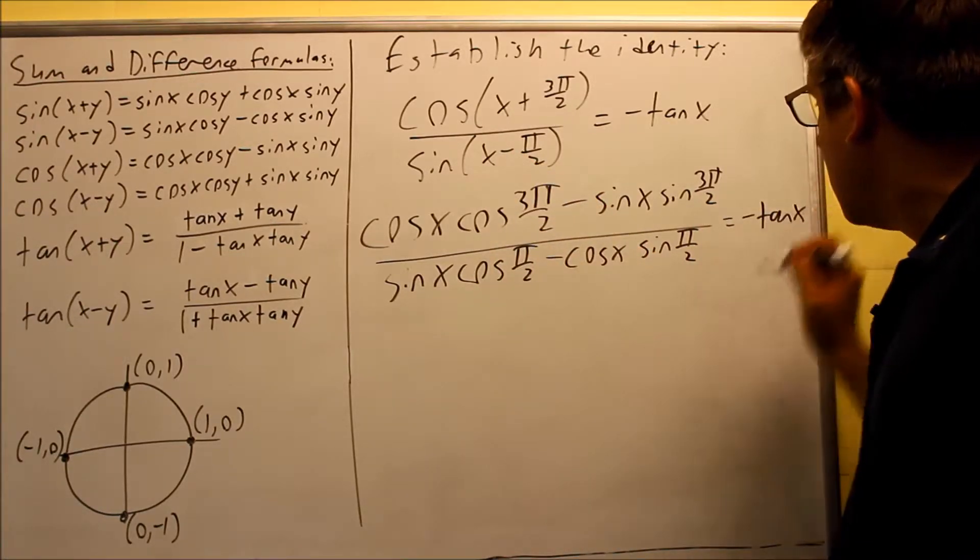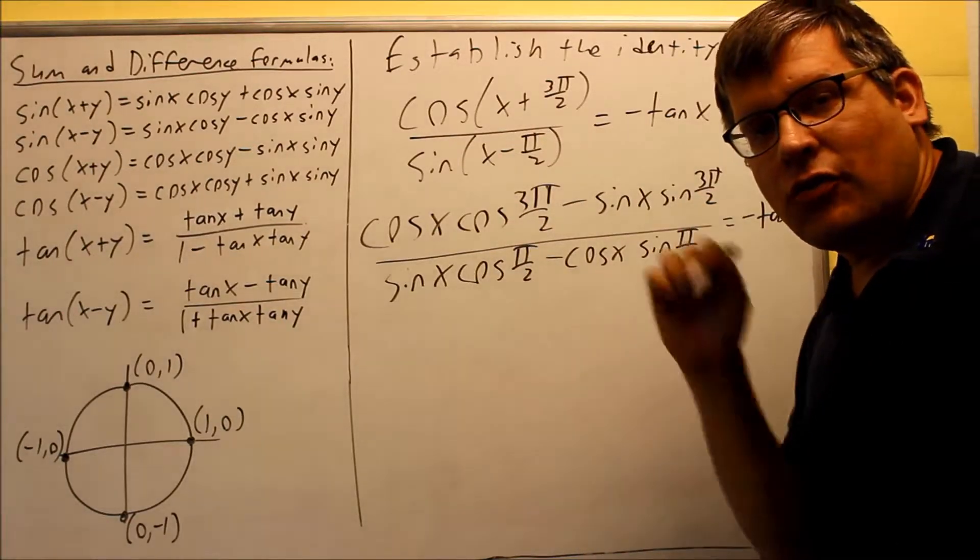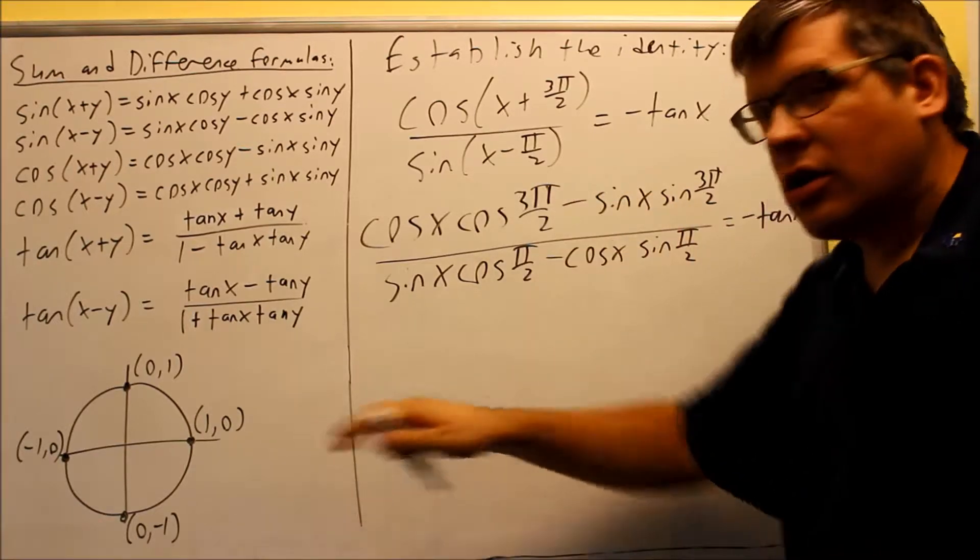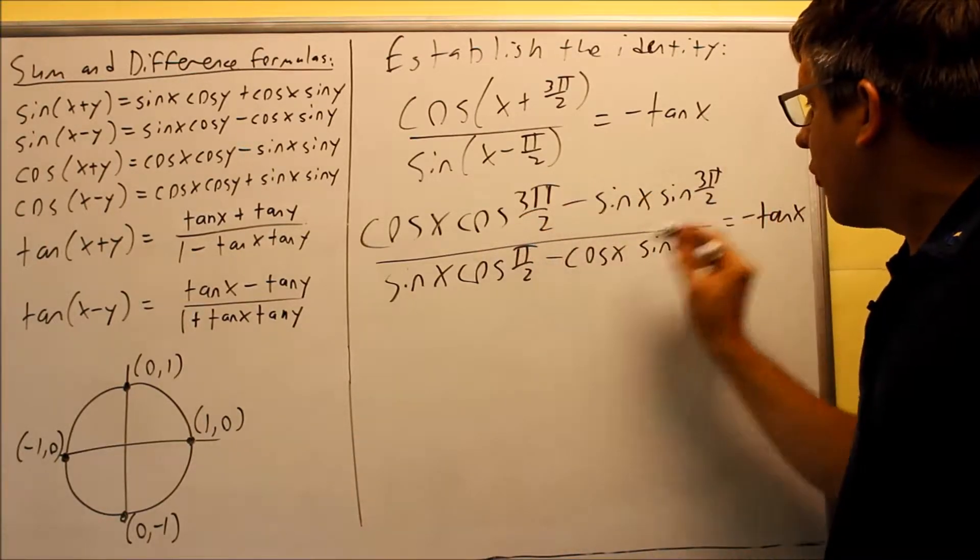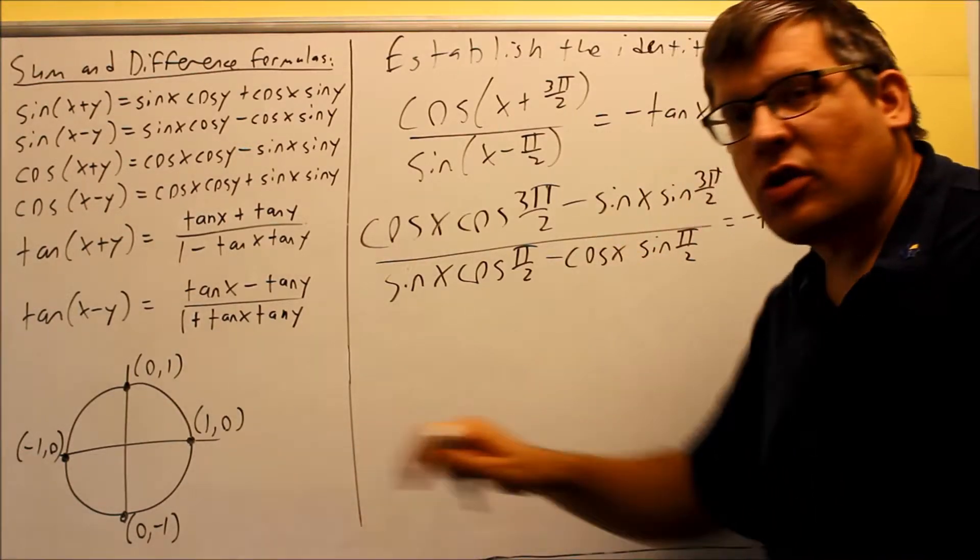Next, we want to simplify this. Now, like we did before in the first example of this session, we need to use the unit circle that's here in order to get exact values for all these here. So 3π over 2 and π over 2, those are values we can get off of here.